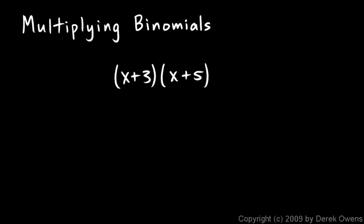So if we come back to this problem here, that means the x here has to get multiplied by this x and by this 5, and the 3 here has to get multiplied by this x and this 5. So in other words we're going to have our x times our x, we're going to have our x times 5, we'll have our 3 times the x, and we'll have the 3 times the 5.